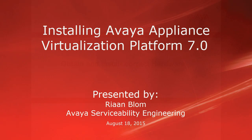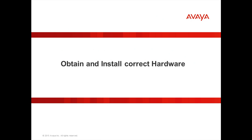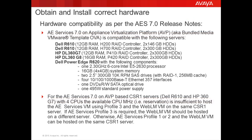The first item you will need to check is to ensure that you obtain the correct hardware to install the Avaya Virtualization Platform, or AVP, on. You should be able to find guidance in either the installation guide or release notes for the release of the product that is compatible with AVP. In this example, I have provided a list of servers that are compatible with Application Enablement Services, or AES. I will be using the Hewlett Packard ProLiant DL360 G8 server to perform this installation.